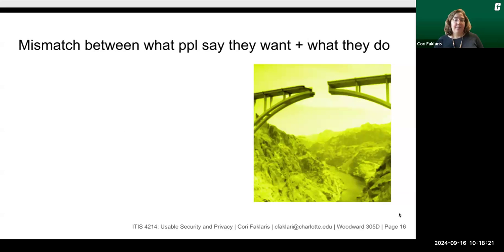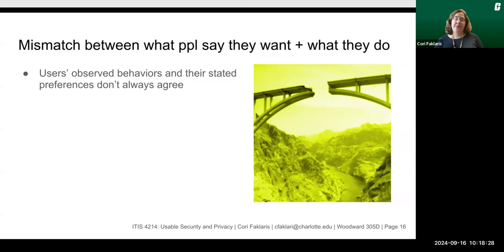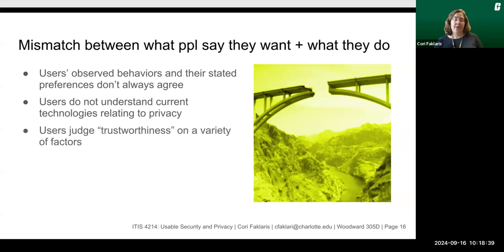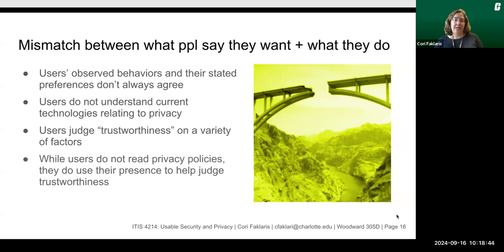We've noticed that there seems to be a mismatch between what people say they want and what they actually do. Users' observed behaviors and their stated preferences don't always agree. Users also do not understand current technologies related to privacy. Users tend to judge trustworthiness on a variety of factors, and while users do not read privacy policies, they do use the presence of these factors to help them judge trustworthiness.